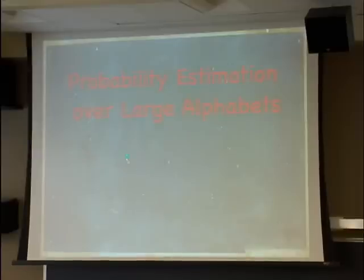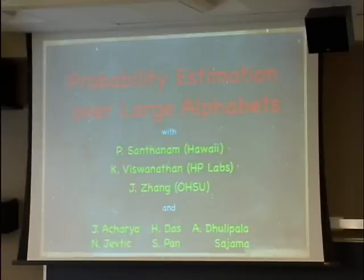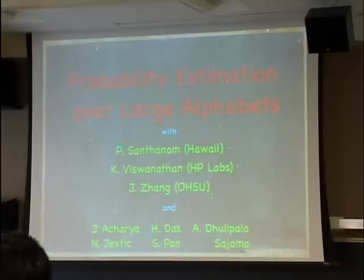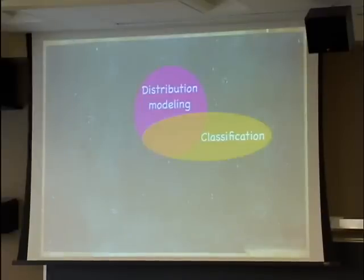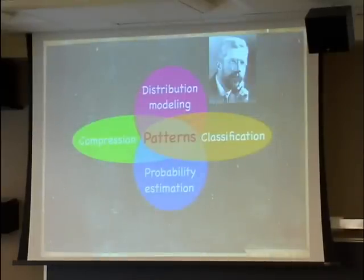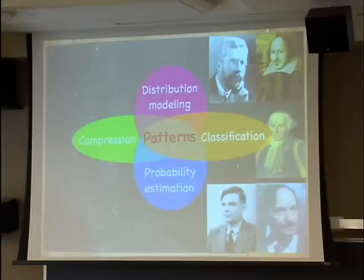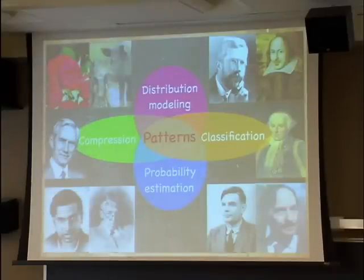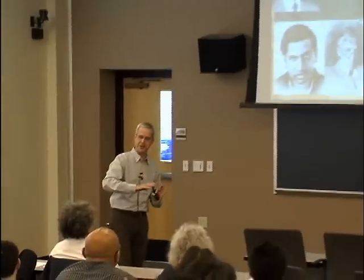We're going to talk about estimating probability when the underlying alphabet is large. This is joint work with a lot of my students, past and present. In particular, what we'll talk about today will be mostly about joint work with Prasad Santana, Krishna Viswanathan, and Junan Jank. We'll discuss four problems: distribution modeling, classification, probability estimation, and compression, looking at all of them from a unified viewpoint, which we call patterns.